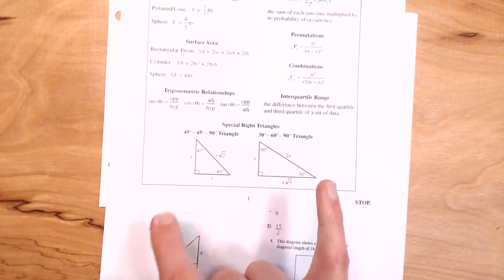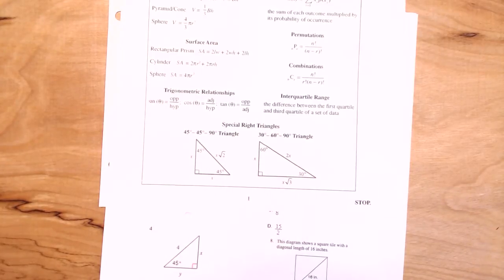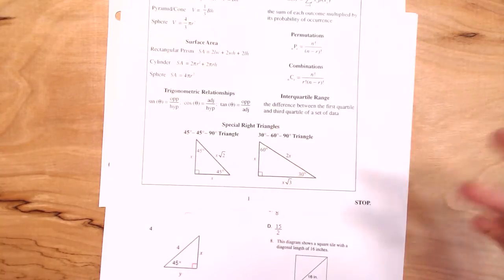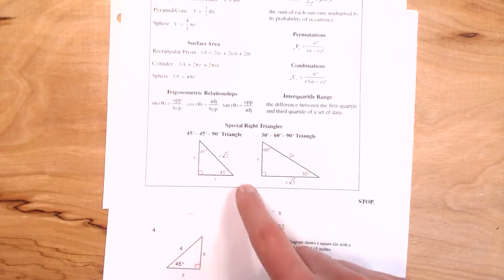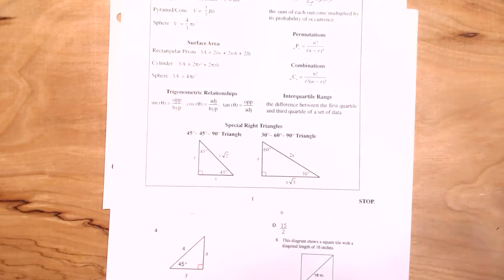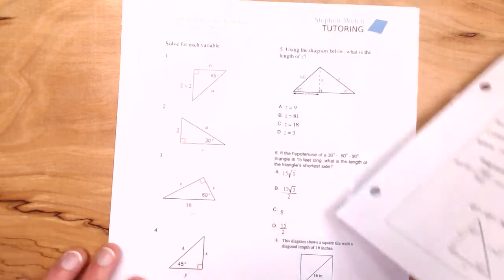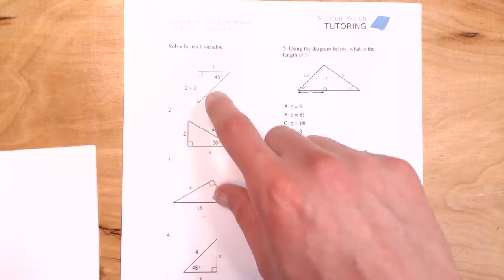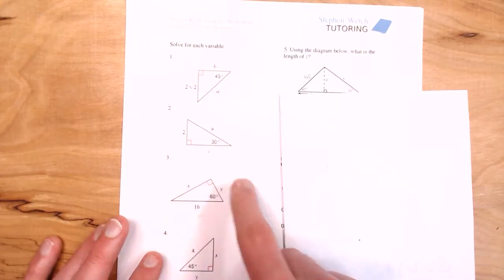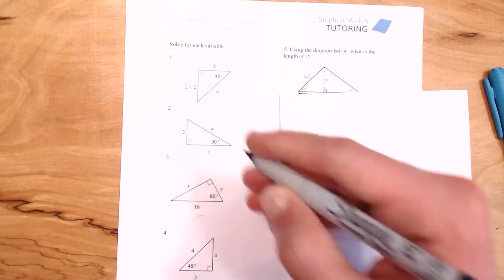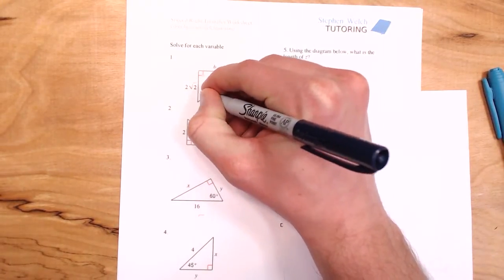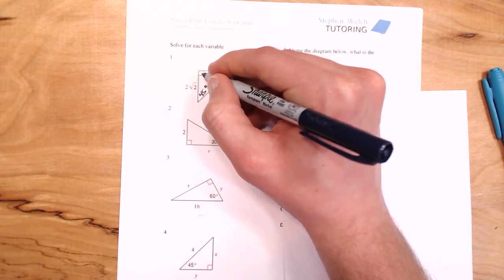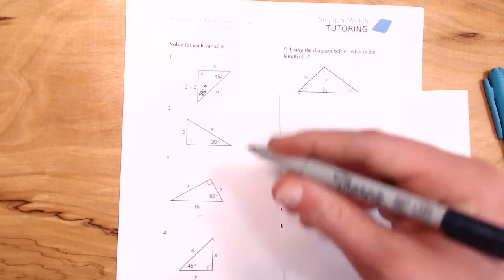What they're trying to give you on the formula sheet is the ratio between the sides. So hang on to that for a second. My first problem asks me to find B and A, and this is going to be a 45-45-90. The missing angle must be 45, because the angles inside a triangle must add to 180 — this is 90, this is 45, so the leftover is 45.